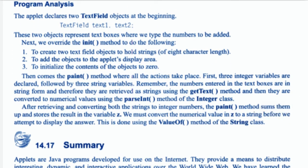Interactive computing with applets — program analysis. The applet declares two TextField objects at the beginning: TextField text1 and text2. These two objects represent text boxes where we type the numbers to be added. Next we override the init method to: first, create the two TextField objects to hold strings; second, add the objects to the applet's display area; third, initialize the content of the objects to zero.